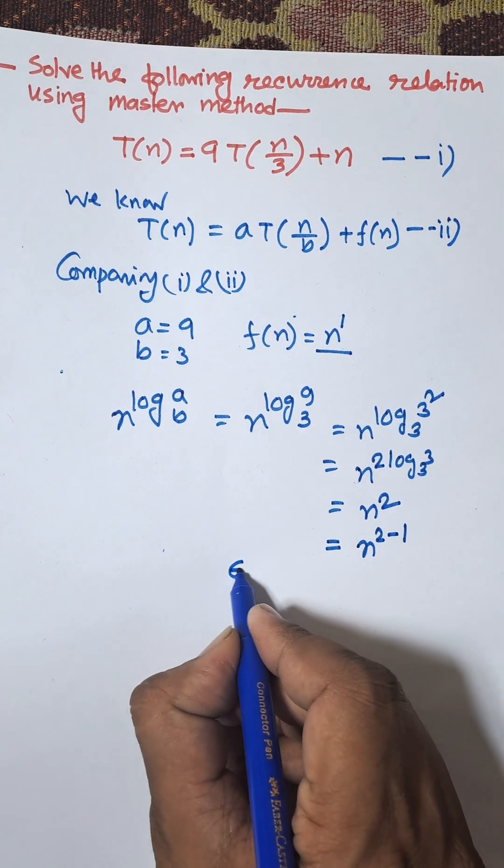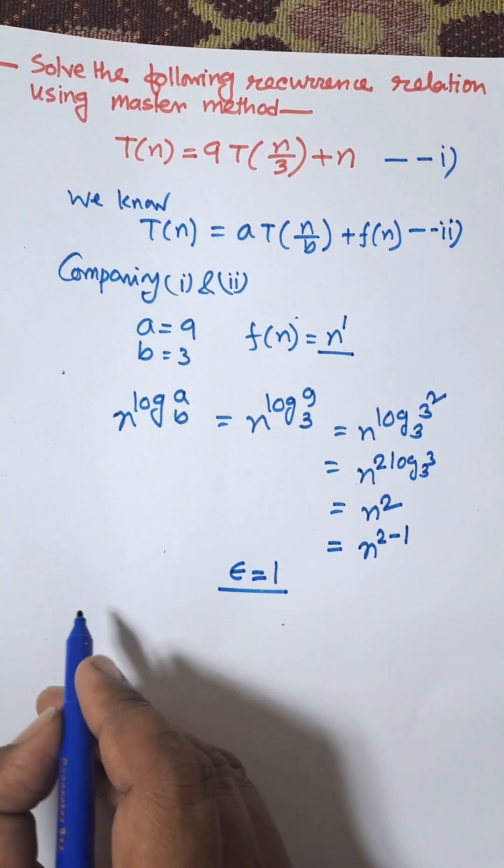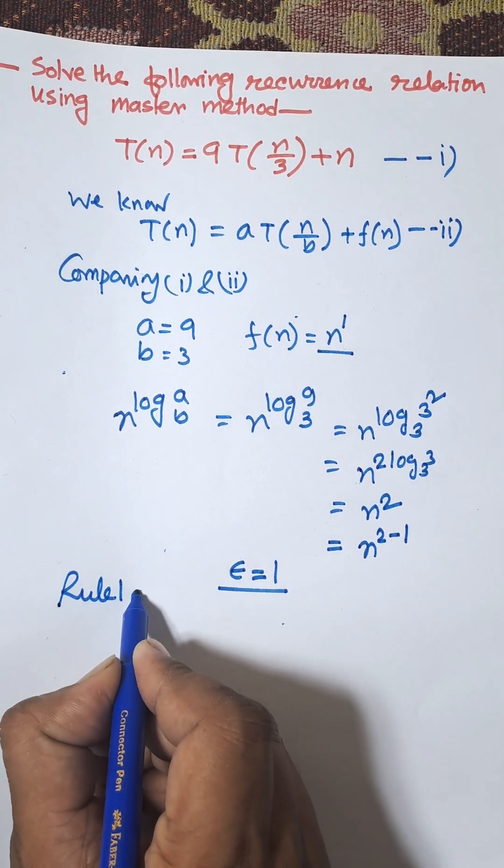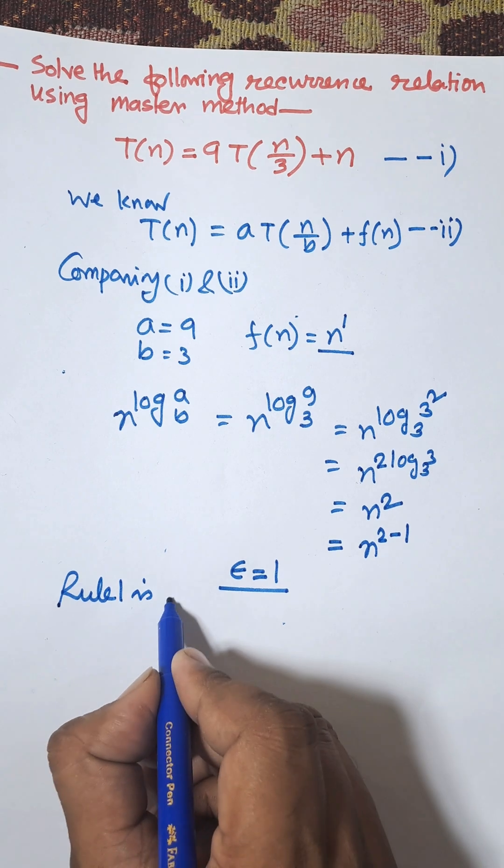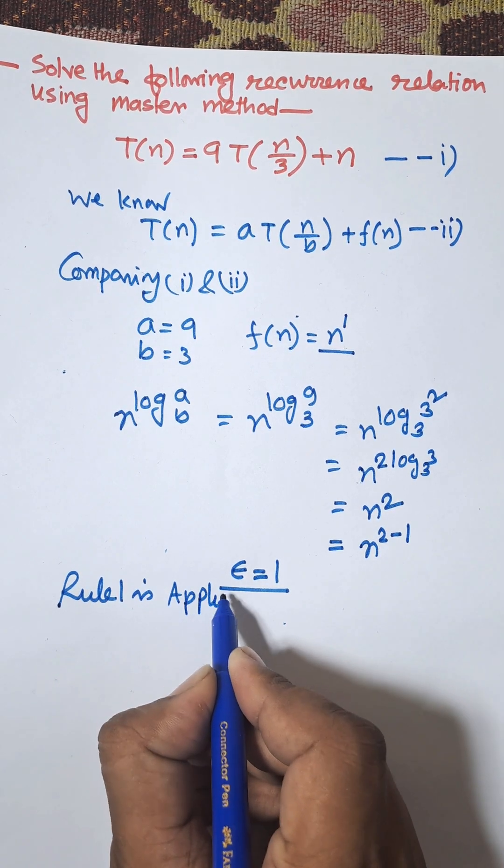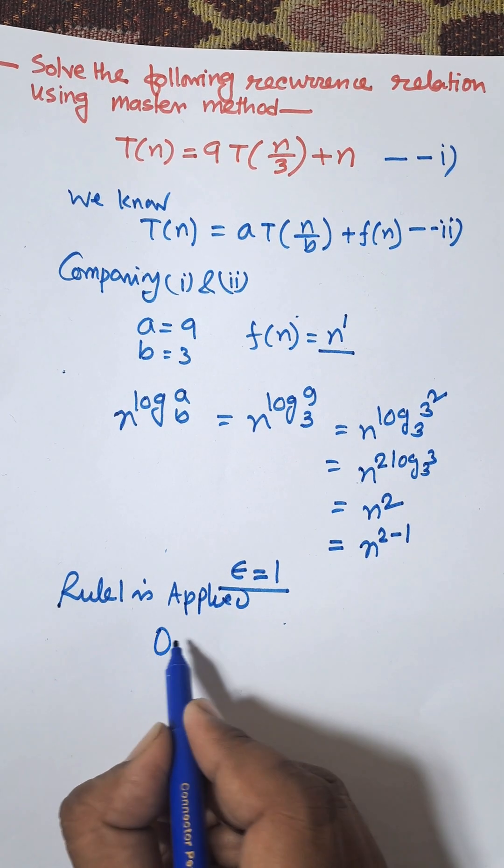Here epsilon equals 1. According to the Master Method, Rule 1 is applied. Rule 1 is applied and time complexity is Order of n squared.